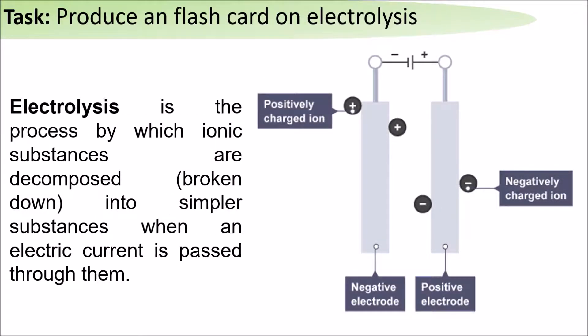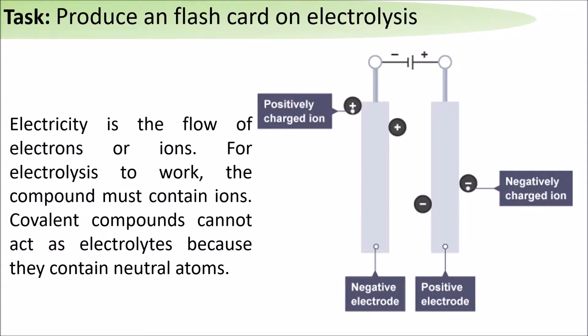Electrolysis is the process by which ionic substances are decomposed into simpler substances when an electric current is passed through them. Electricity is the flow of electrons or ions. For electrolysis to work, the compound must contain ions.